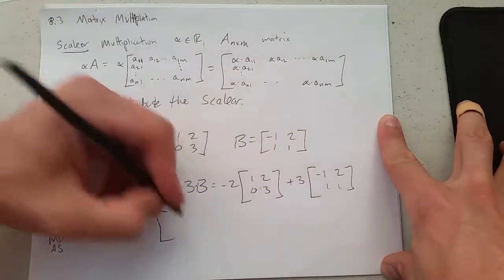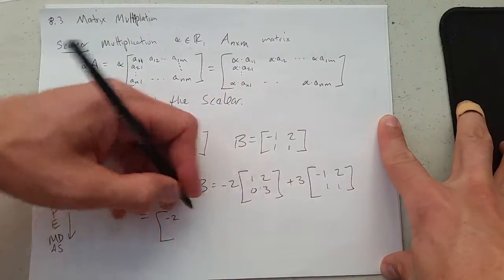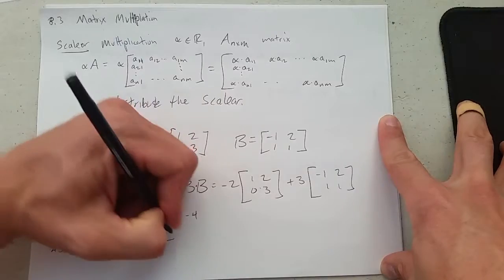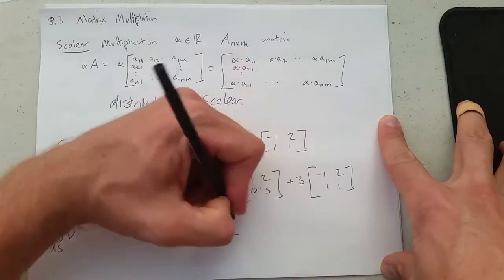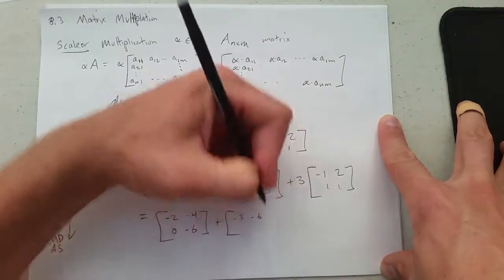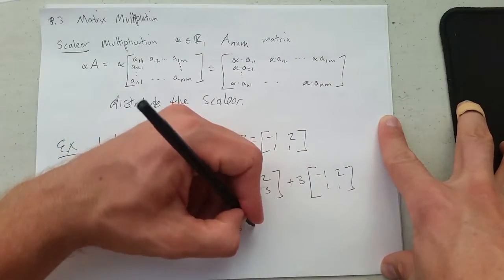I'm going to multiply the negative 2 in here. We have negative 2, negative 4, 0, negative 6, plus negative 3, negative 6, 3, 3.